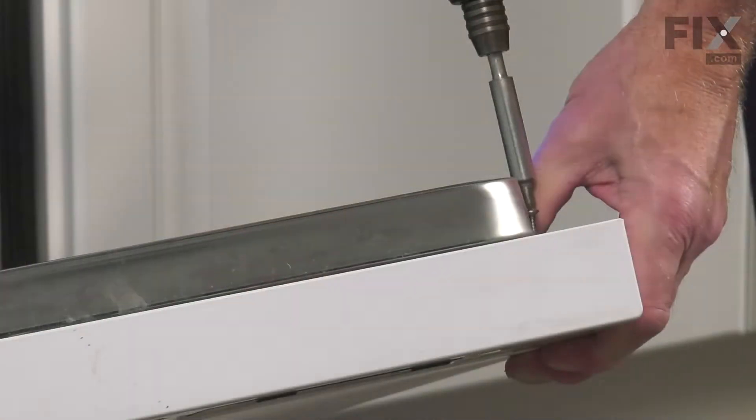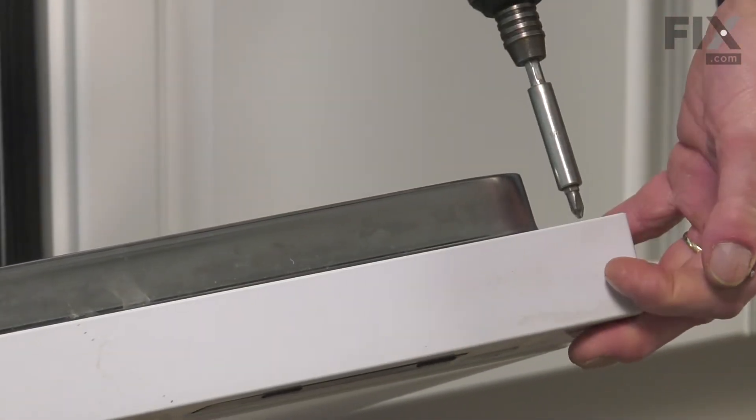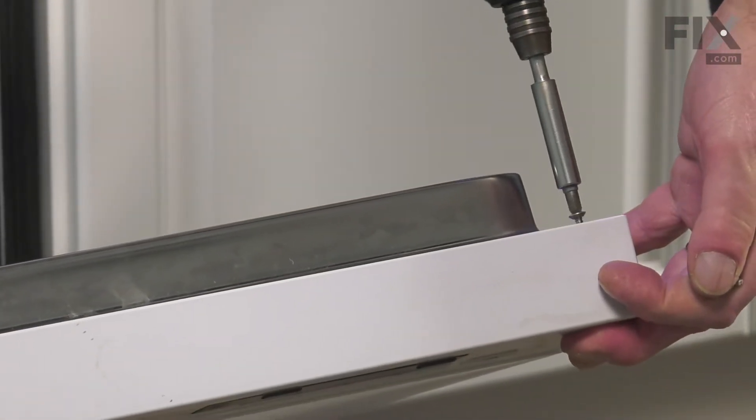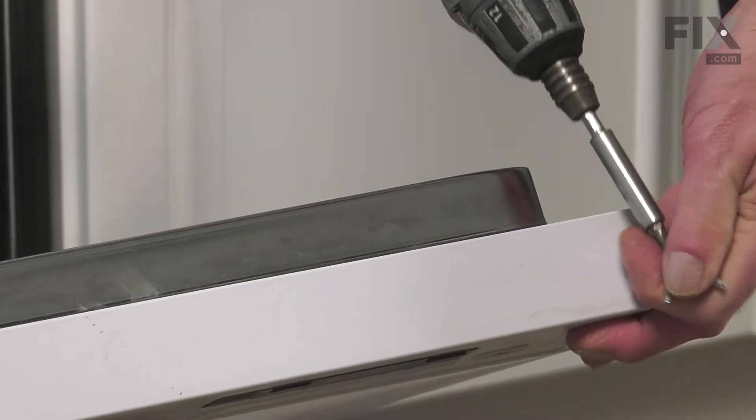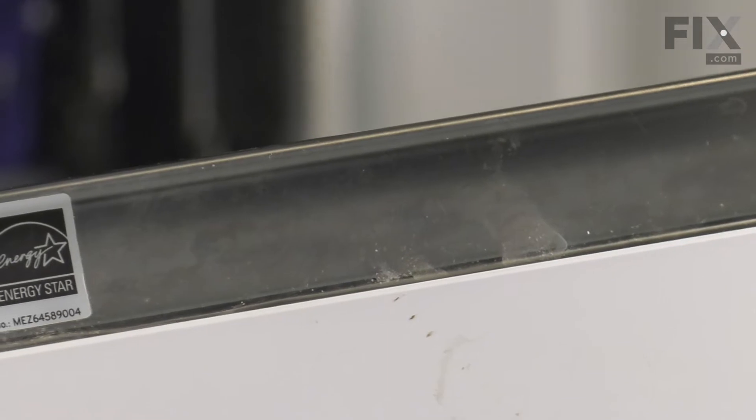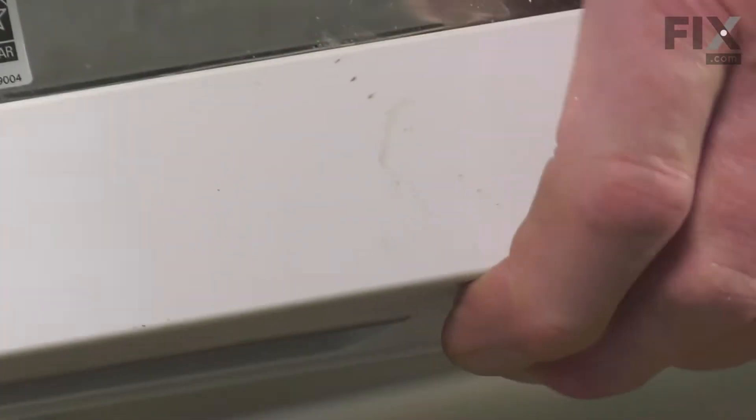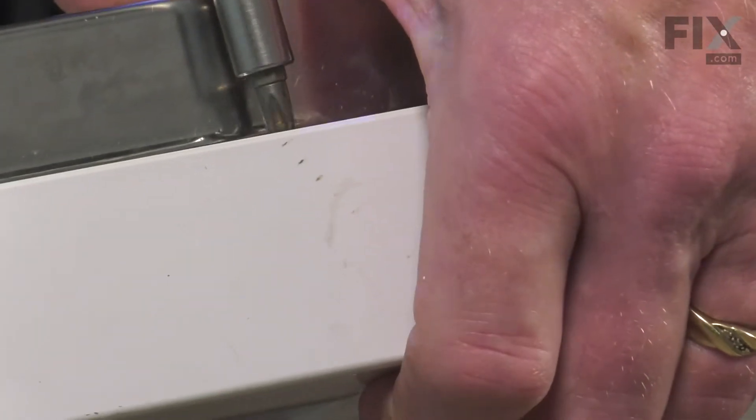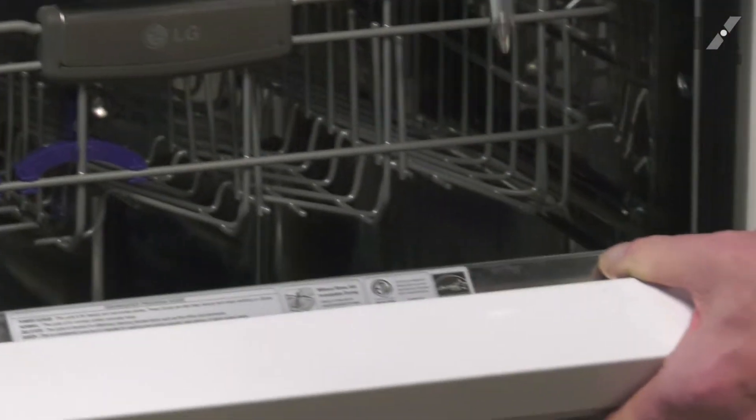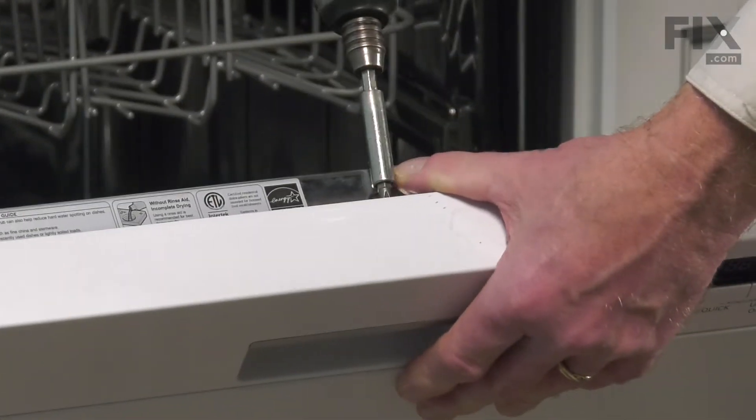The final four screws are where the door hook enters the door latch opening. Be sure to support that whole assembly as you remove the last screw.